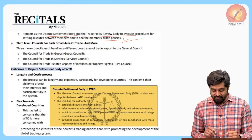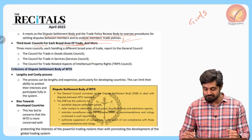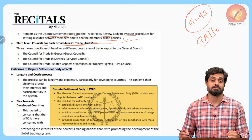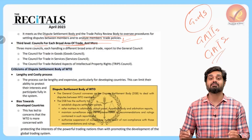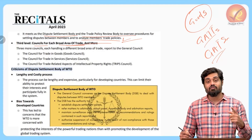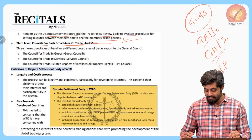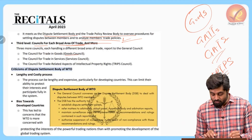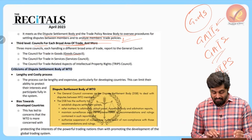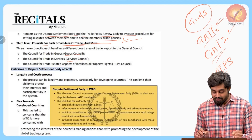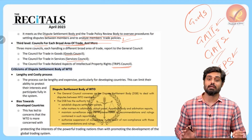The third level consists of councils for each broad area. One area is goods, covered under the General Agreement on Tariffs and Trade (GATT). Another is trade in services, under the General Agreement on Trade in Services (GATS). The third area is intellectual property rights, under TRIPS — Trade-Related Aspects of Intellectual Property Rights. There are three councils: the Goods Council, the Services Council, and the TRIPS Council.